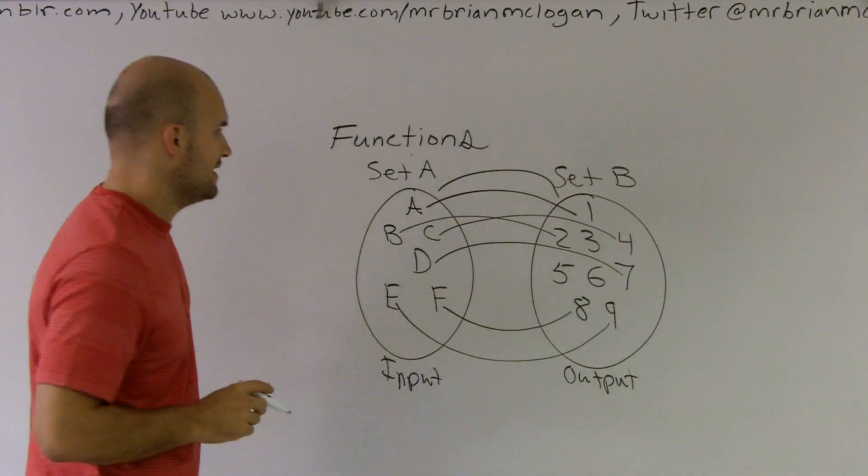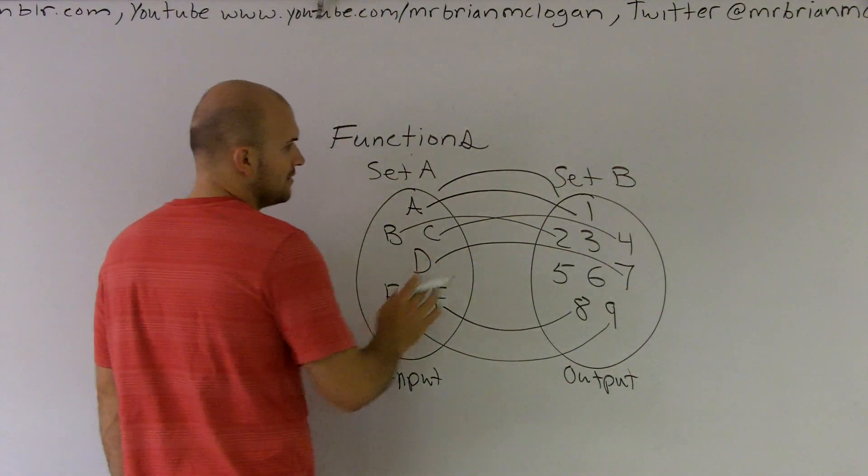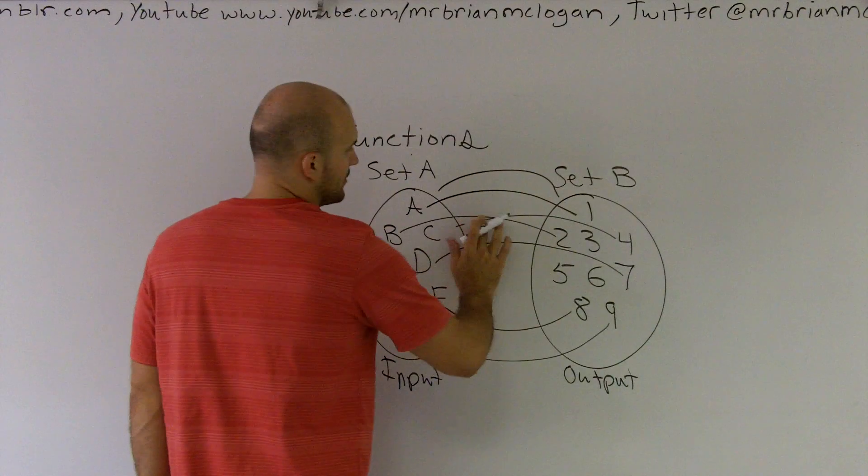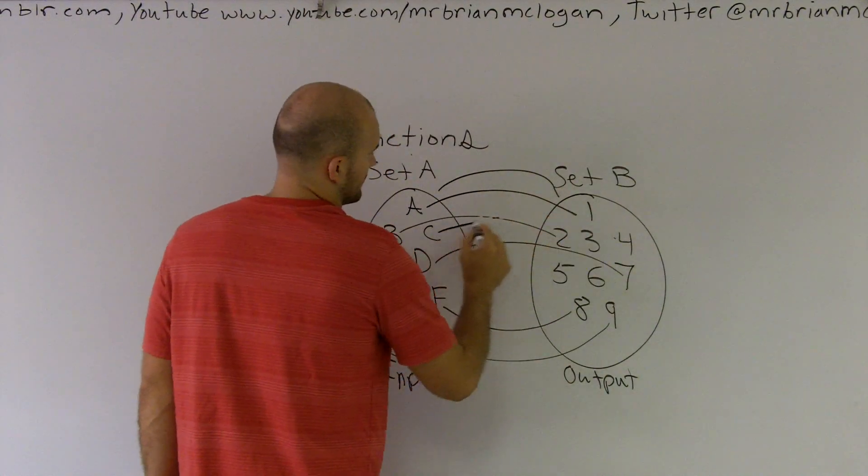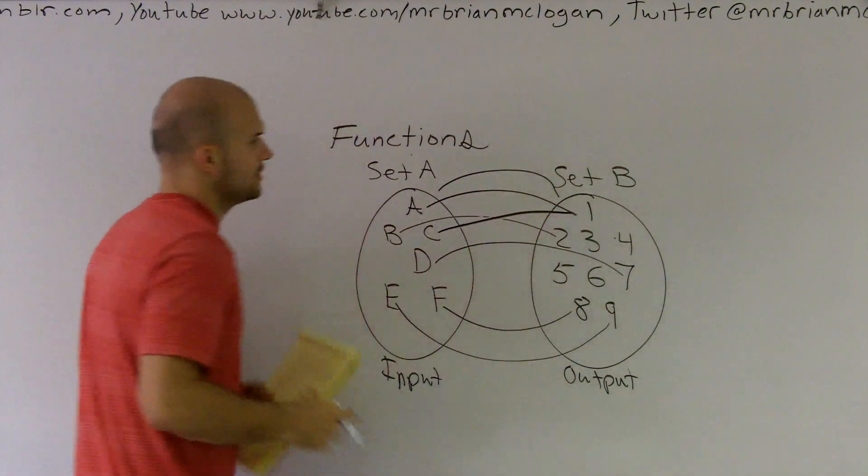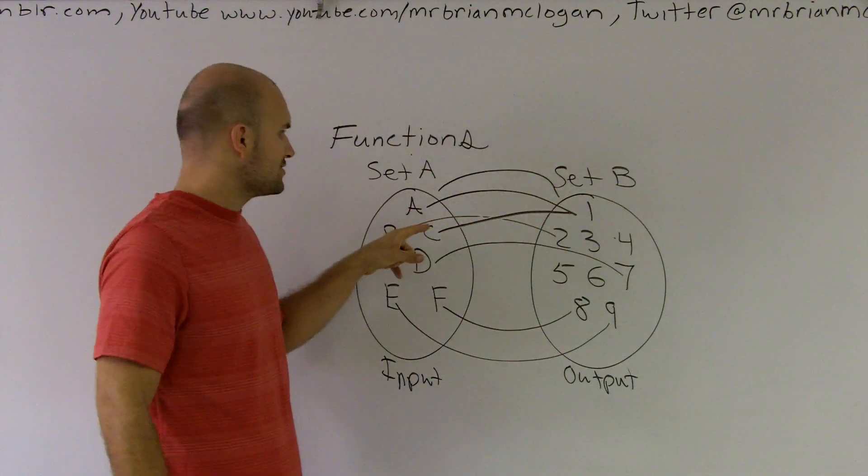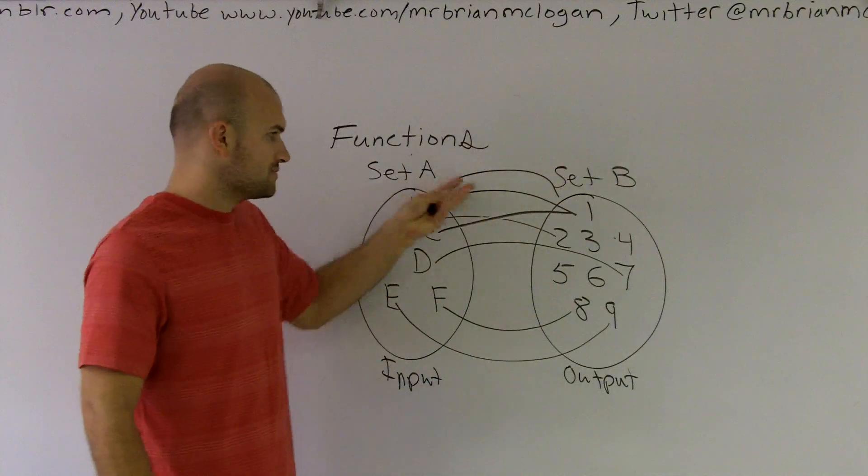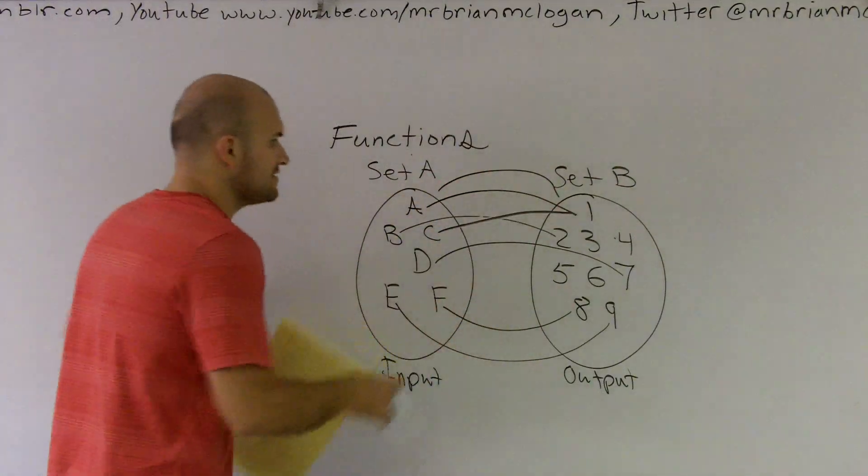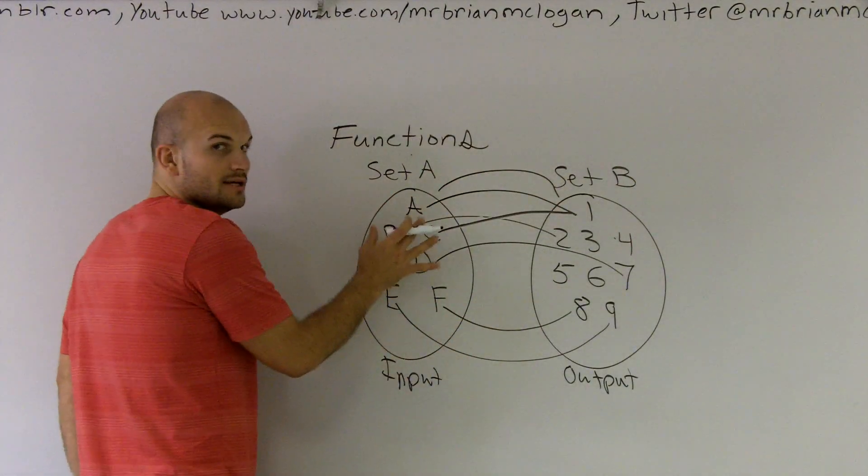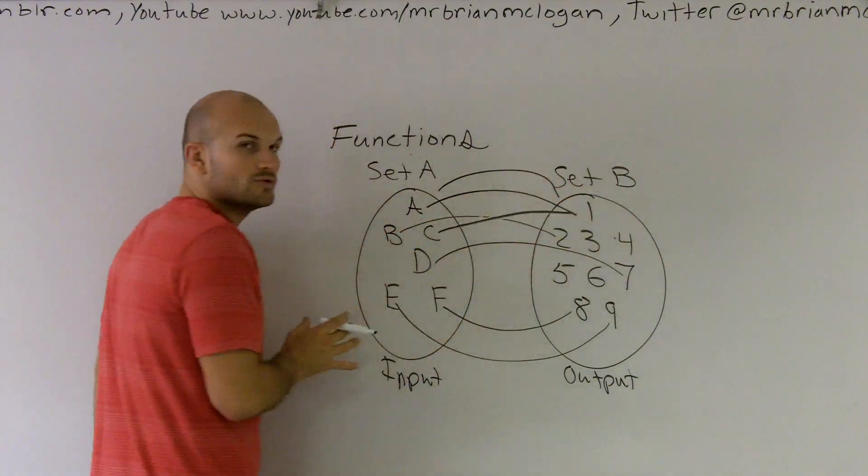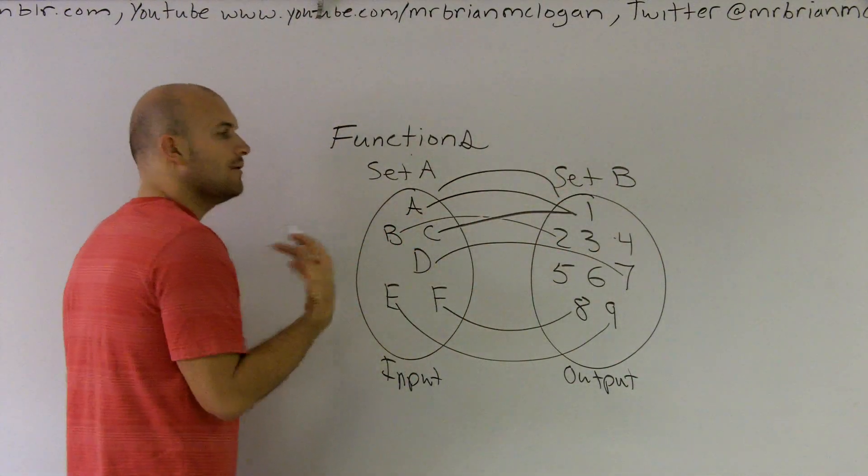The next thing we can have is two elements going to the same output. You can have A maps to 1 and also C maps to 1. This still creates a function relationship because everything inside the input set still maps to something in the output set.